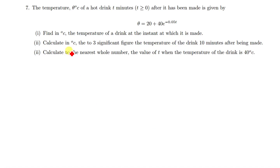The question says the temperature θ degrees Celsius of a hot drink t minutes, where t is greater than or equal to zero, after it has been made is given by this formula. The question says find in degrees Celsius the temperature of the drink at the instant at which it is made.